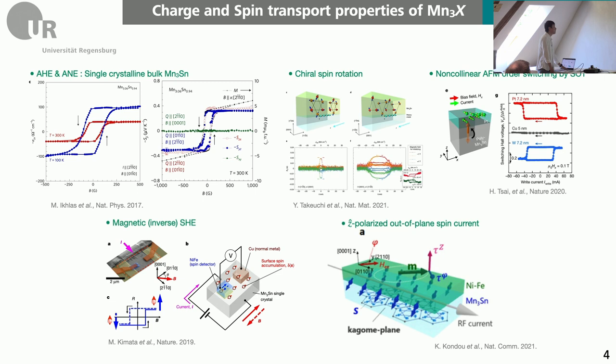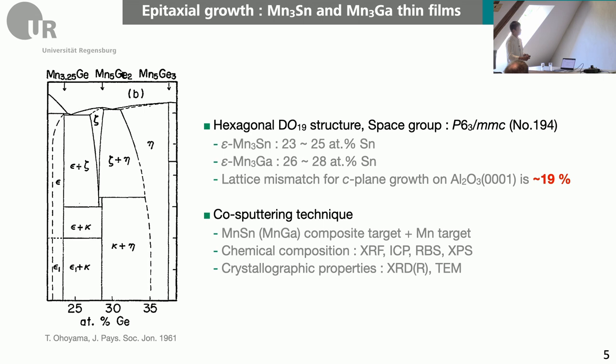These materials are really interesting, but from an experimentalist's point of view, it's really hard to realize because, as you can see from this phase diagram, this phase diagram is really messy. We are aiming at this particular epsilon phase, which only has a stable chemical composition range of about one to two percent.